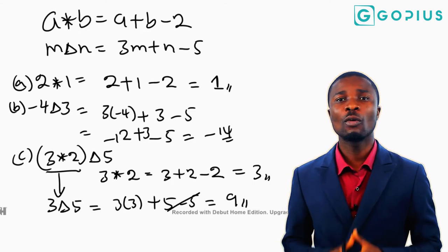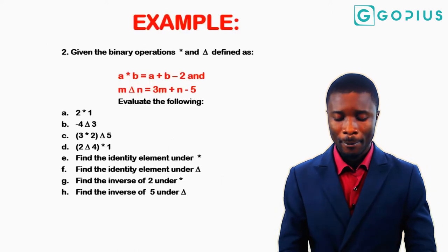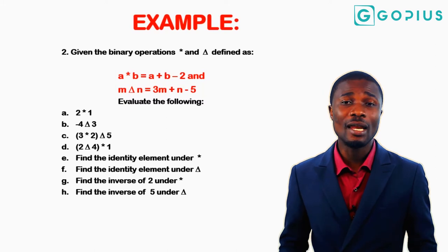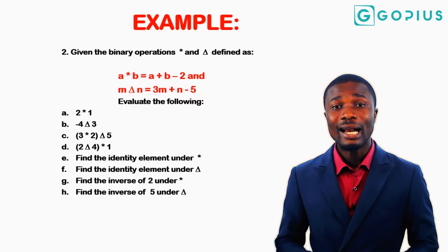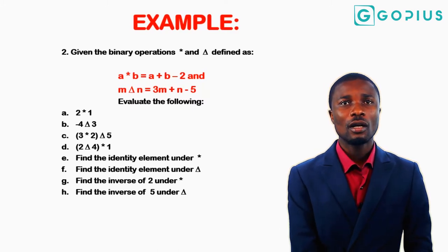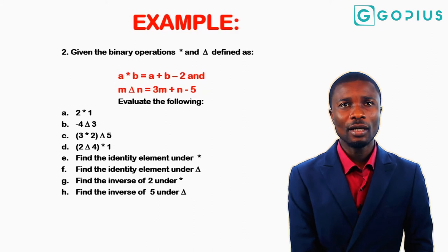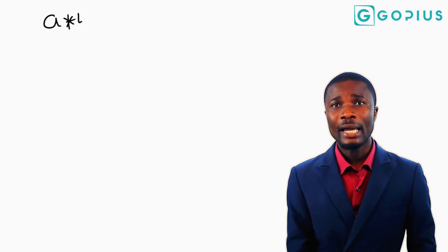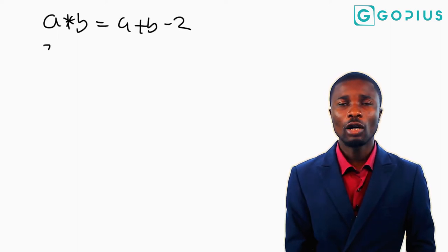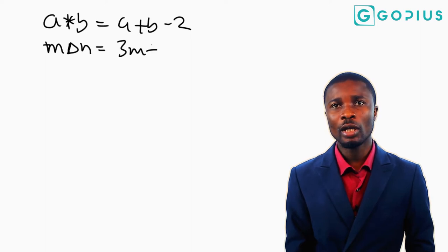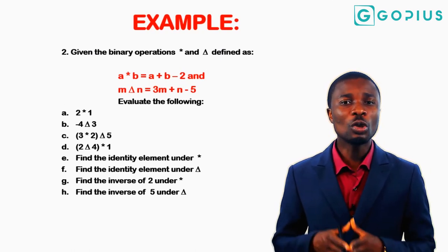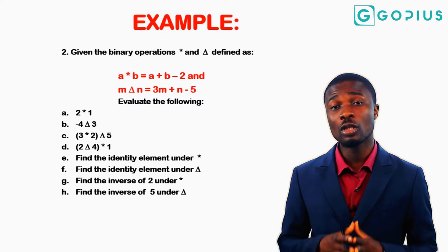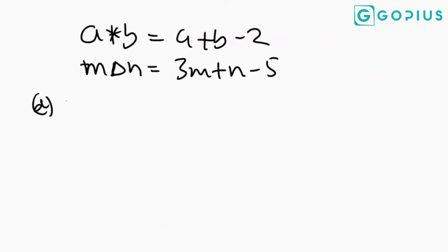Always take care of the bracket first, then use that answer to evaluate the rest. The next question has delta inside the brackets and star outside. We have to evaluate (2 delta 4) star 1. We take care of the bracket first, which is 2 delta 4, using the operation delta defined as 3m plus n minus 5.